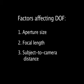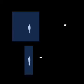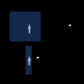The third element that affects depth of field is subject to camera distance. This is the distance from the camera's lens to the in-focus subject. The larger the distance between the subject and the camera, the longer the depth of field will be. And the smaller the distance between the subject and the camera, the shorter the depth of field will be.